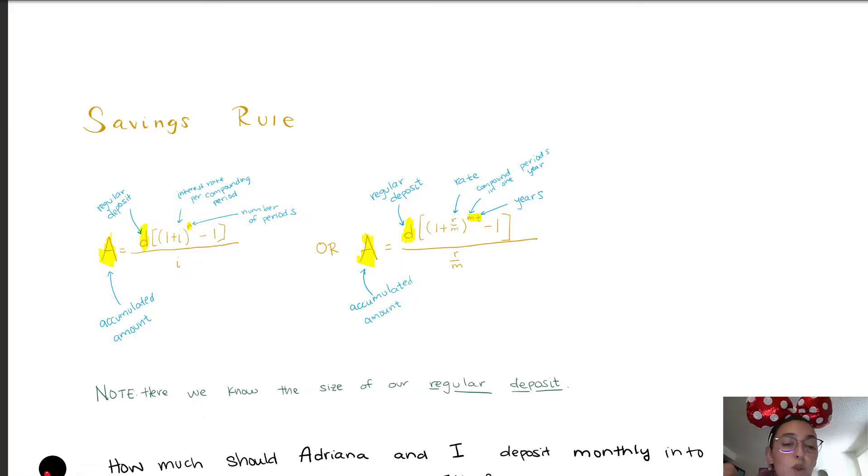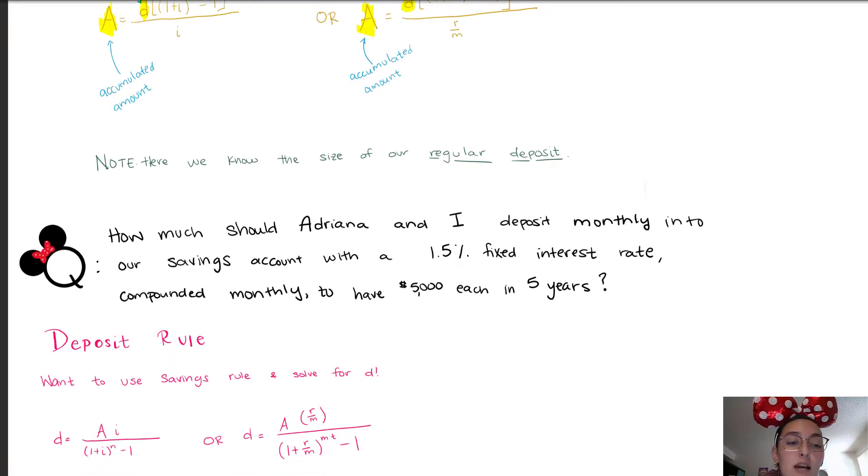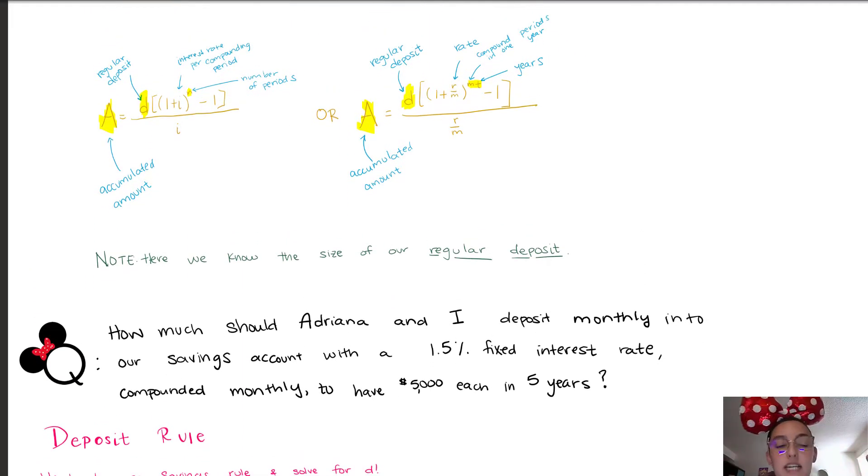Now something to note when we're using the savings rule, we already know the size of our regular deposit. We just want to see what's going to be how much we're going to have at the end, what our balance is going to be. The question that Adriana and I were answering is, or want to answer, is how much should we deposit monthly into our savings account?